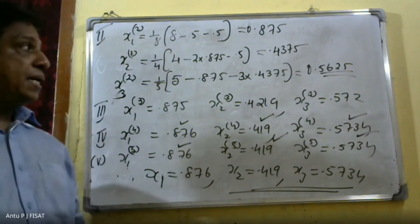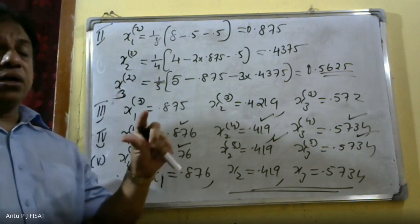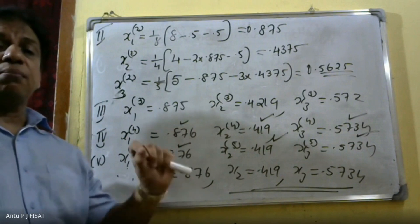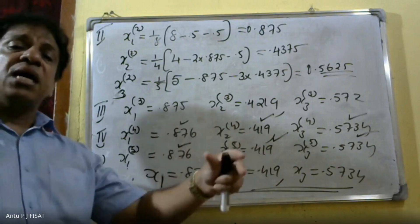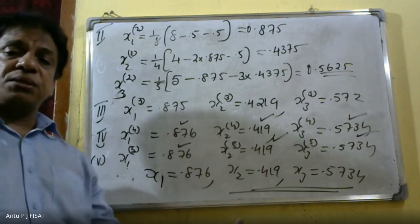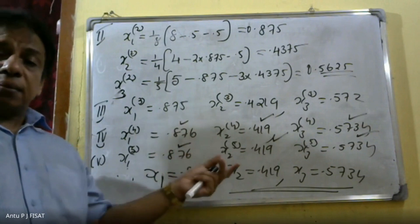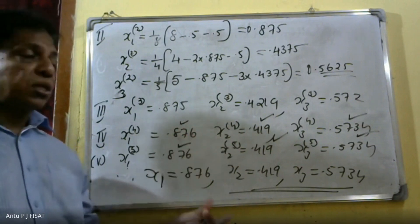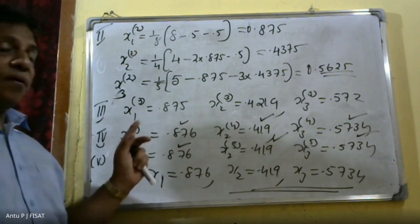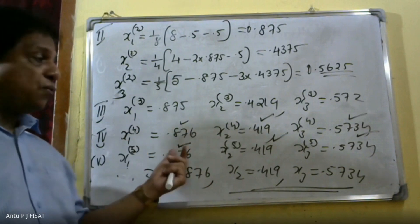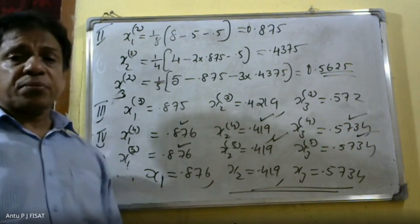This is the Gauss-Seidel Iteration method, also compared to the Jacobi method. In the Gauss-Seidel method, we use the latest updated values at each step, whereas in the Jacobi method we use the same values from the previous iteration throughout. The Gauss-Seidel method converges faster as a result.